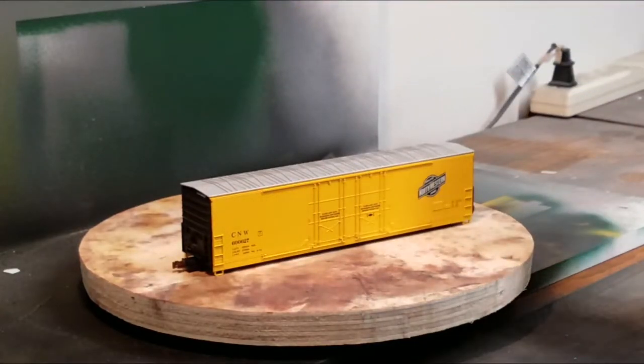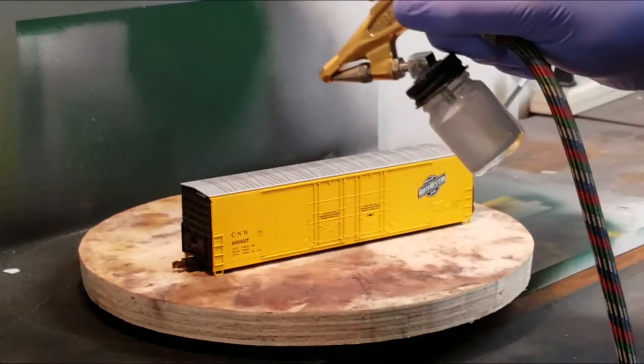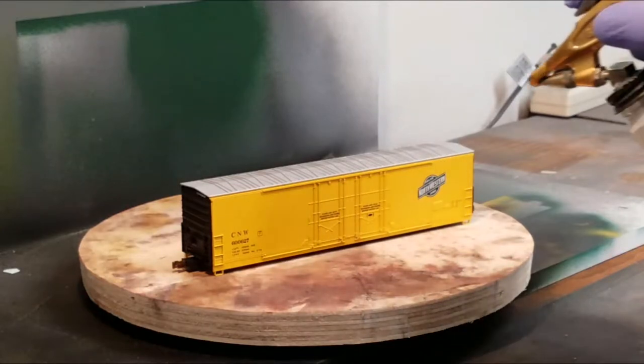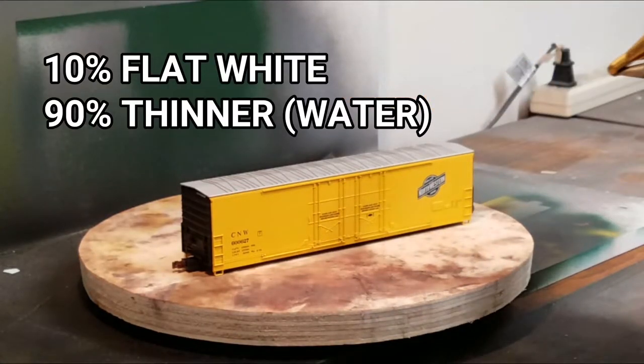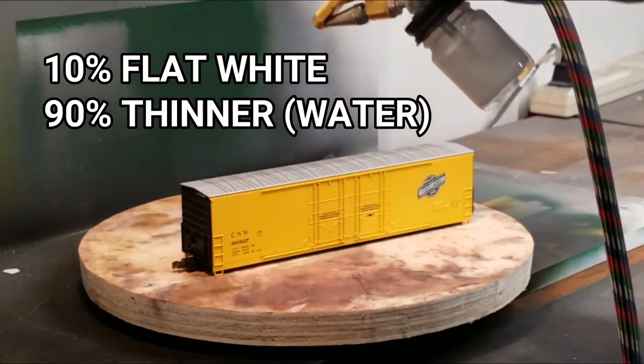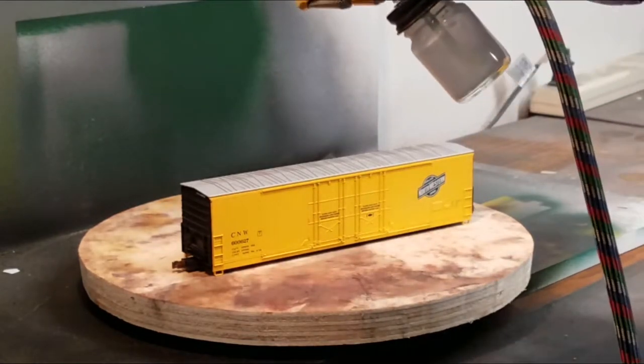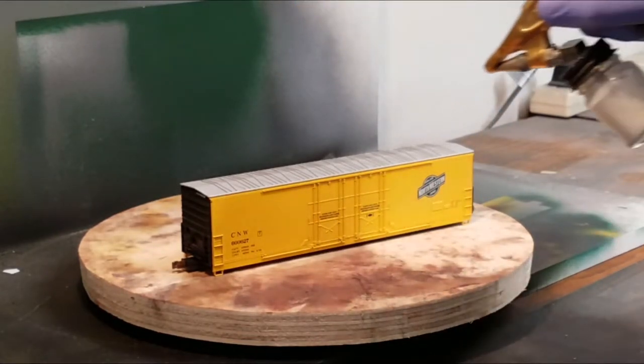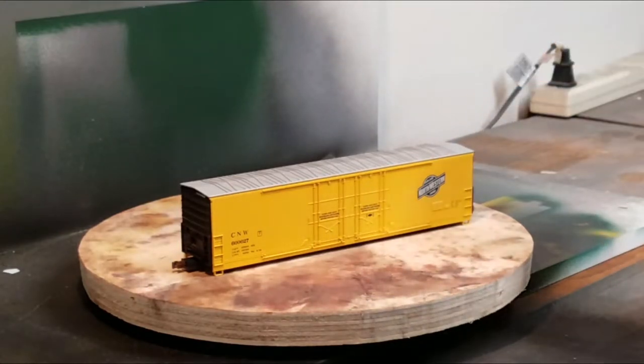After the dull coat on my model dried, my next step was to apply a fade. My fade solution is 10% flat white paint and 90% thinner. Since this is an acrylic paint, my thinner is water. As you can see, I just go back and forth until I get the desired fade.